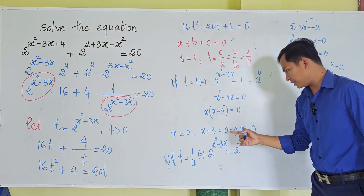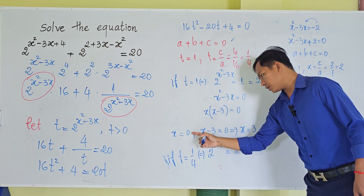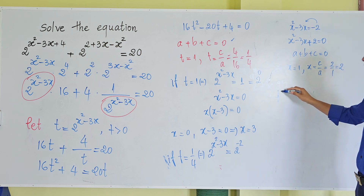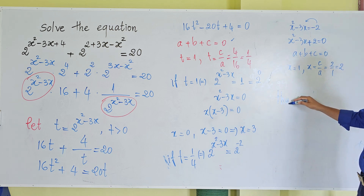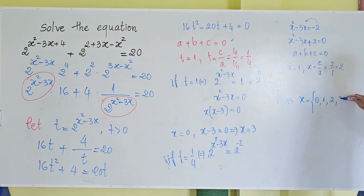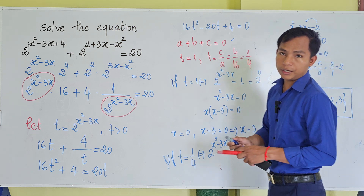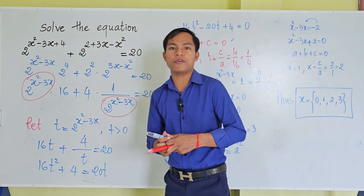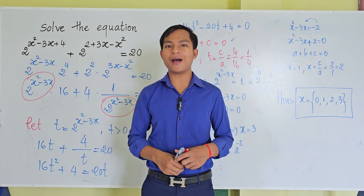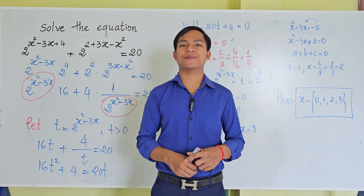So we get all four values of x: x = 0, x = 1, x = 2, and x = 3. Those are our answers. Thank you for watching. If you like my video, please don't forget to subscribe to my channel for more exciting videos. Goodbye, see you in the next video!